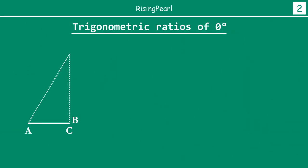Let's clean this up and give ourselves a little more space. B dash again represents the original position of point B. Our triangle now has angle A equal to zero. So sine zero degrees equals zero.